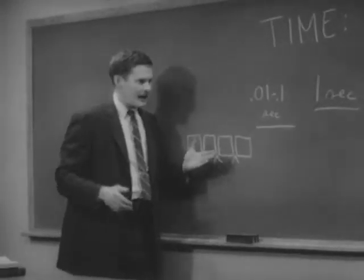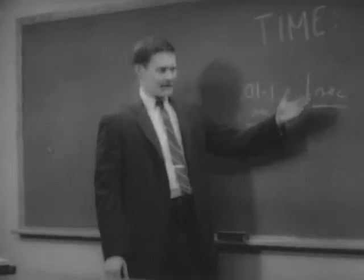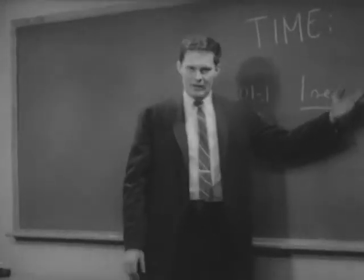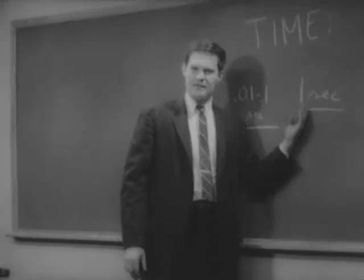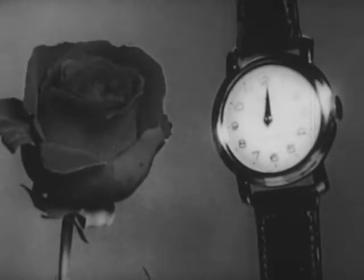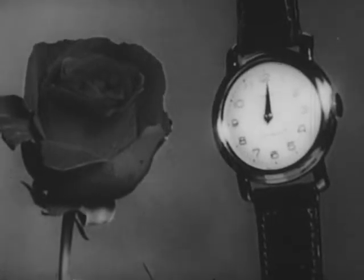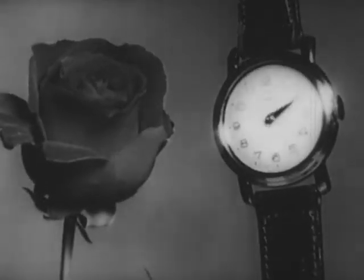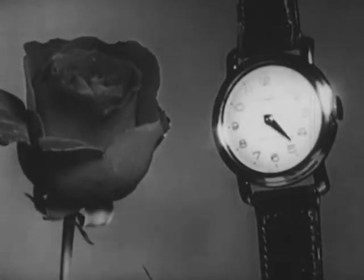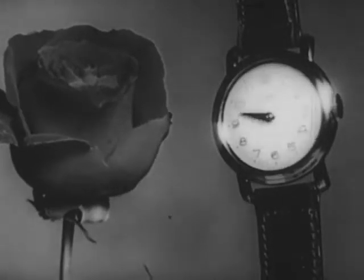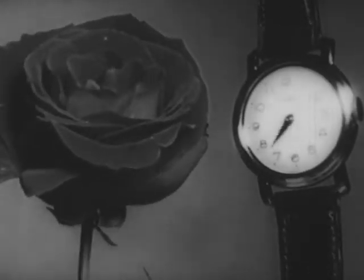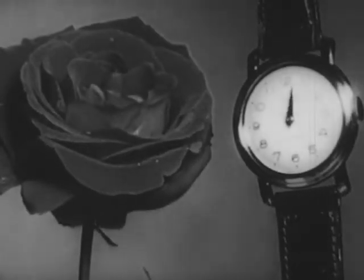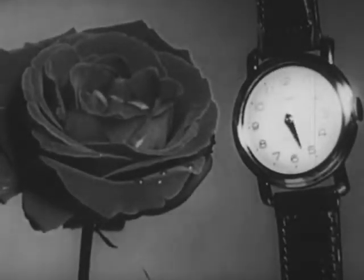Just for fun, I can take something that takes place over a long time and telescope it so it takes place in a short time. Here is a rose, and it's growing, but nothing seems to be happening — you can watch it for five minutes and get bored. But if we take a picture once an hour and show them rapidly, you can see the flower unfolding in an almost explosive way.